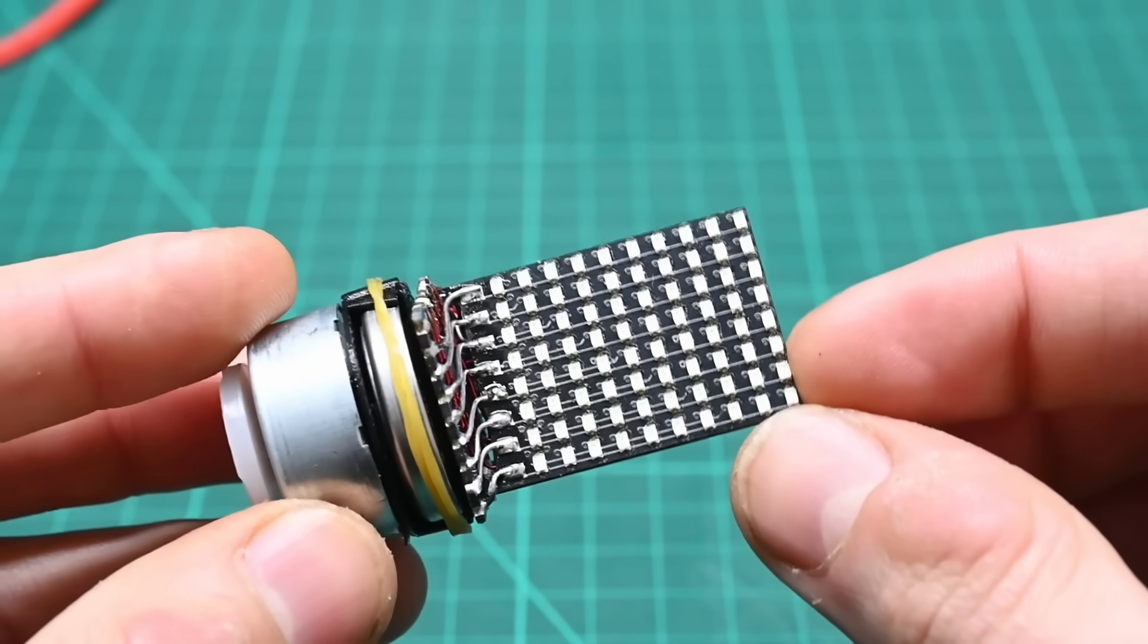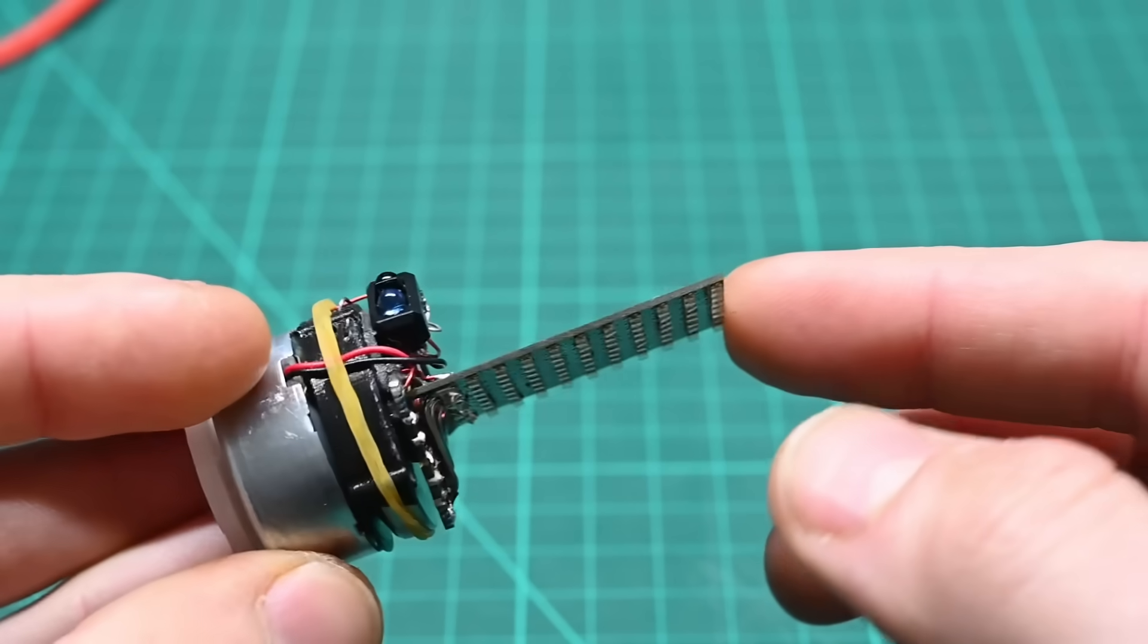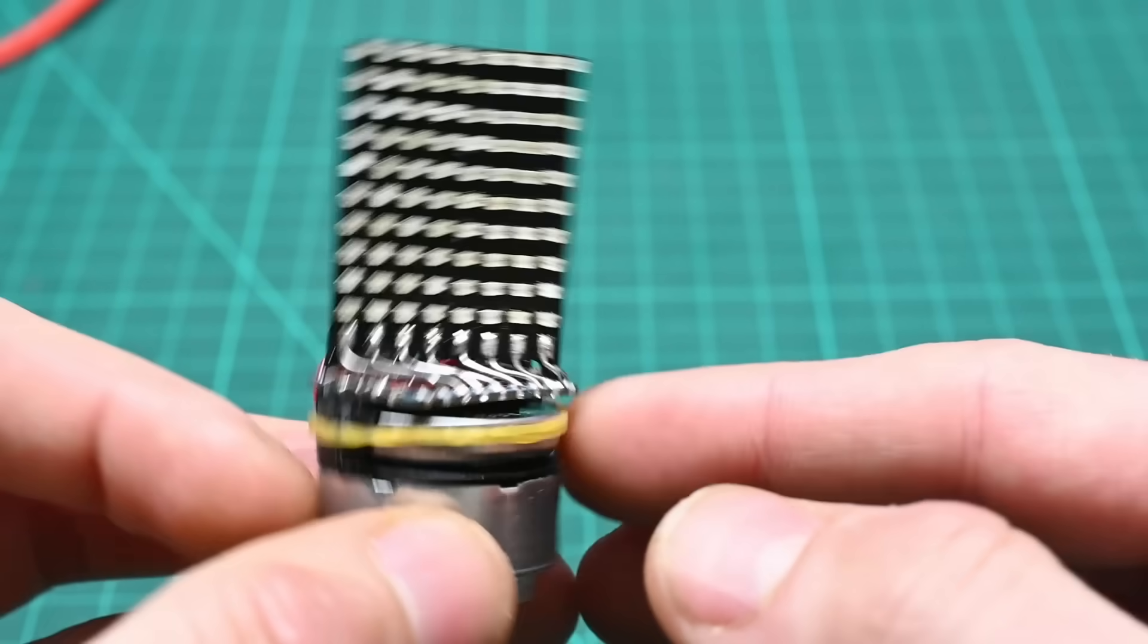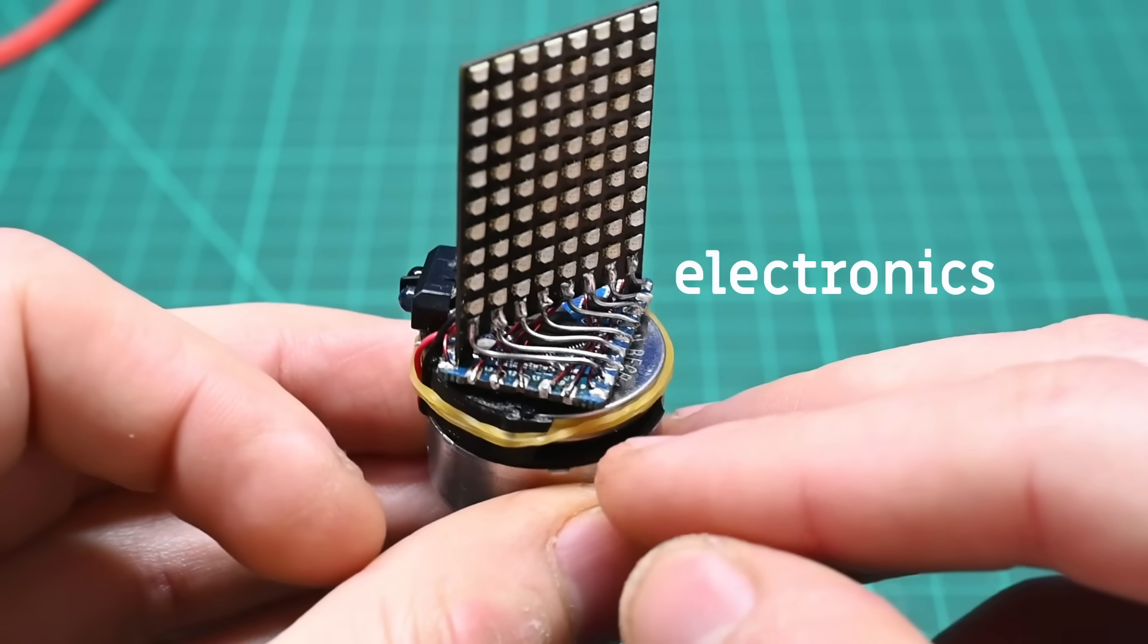This is my prototype of a very small volumetric display. I've got an LED matrix at the top, a bunch of electronics underneath.